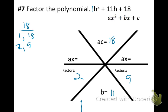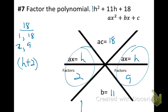And then we place a 1h here and a 1h there. And now we have our factors here and here. So we can write them in our parentheses, h plus 2 times h plus 9.